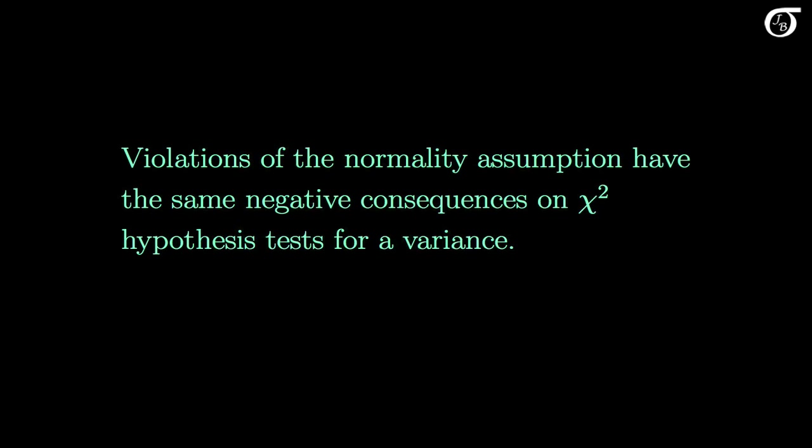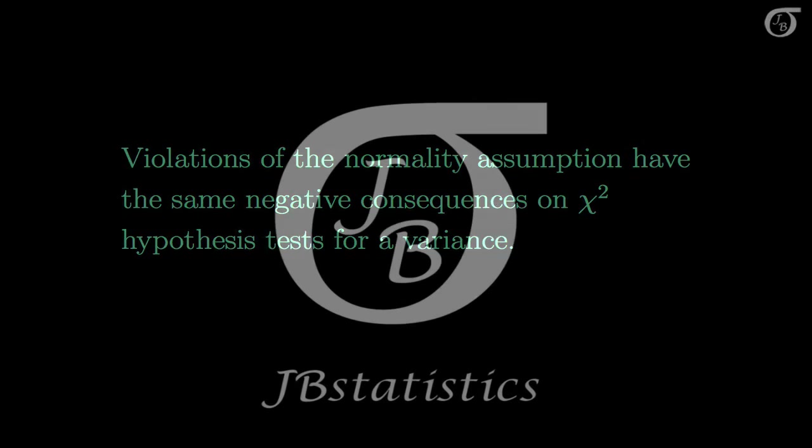Violations of the normality assumption are just as bad in chi-square hypothesis tests for a variance as they are in confidence intervals. Since these inference procedures for variances perform so poorly for many violations of the normality assumption, and large sample sizes don't help, one could make an argument that they should never be used. At a bare minimum, one should exercise a great deal of caution when drawing conclusions from these procedures.